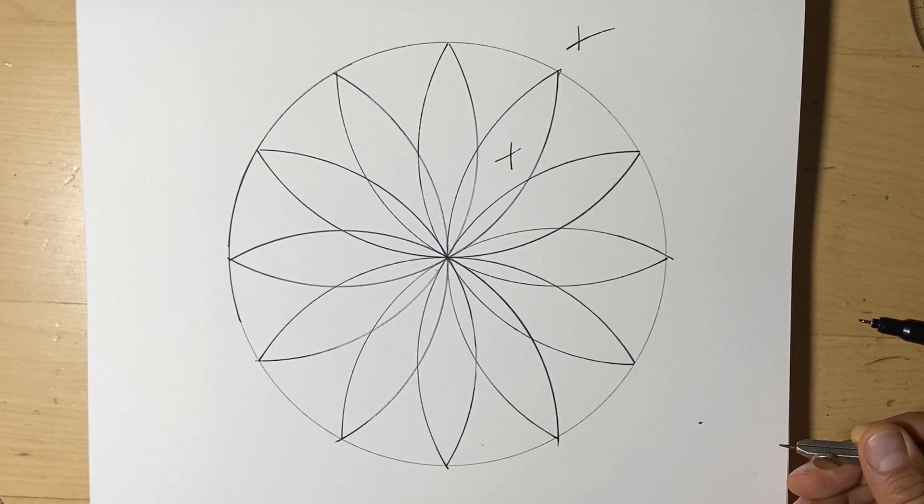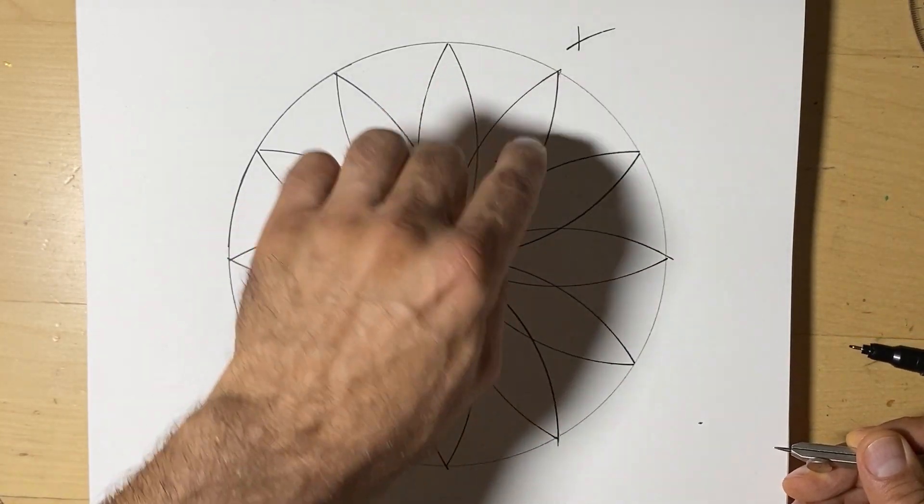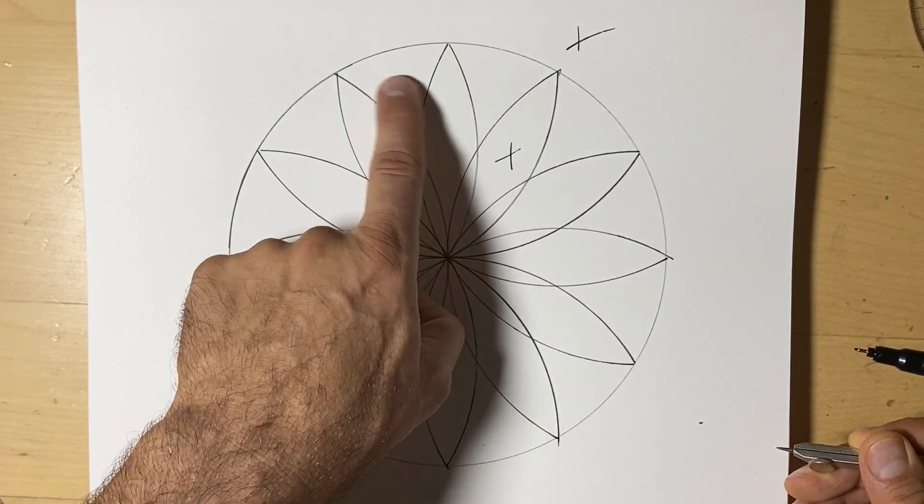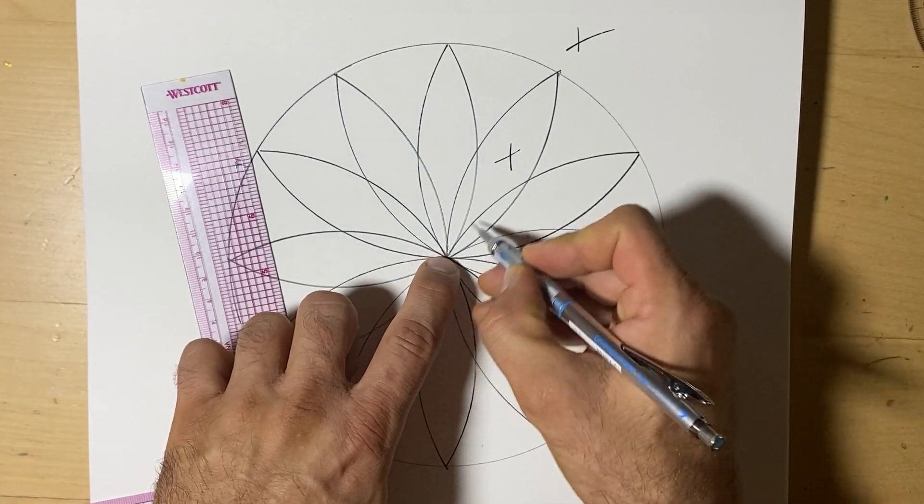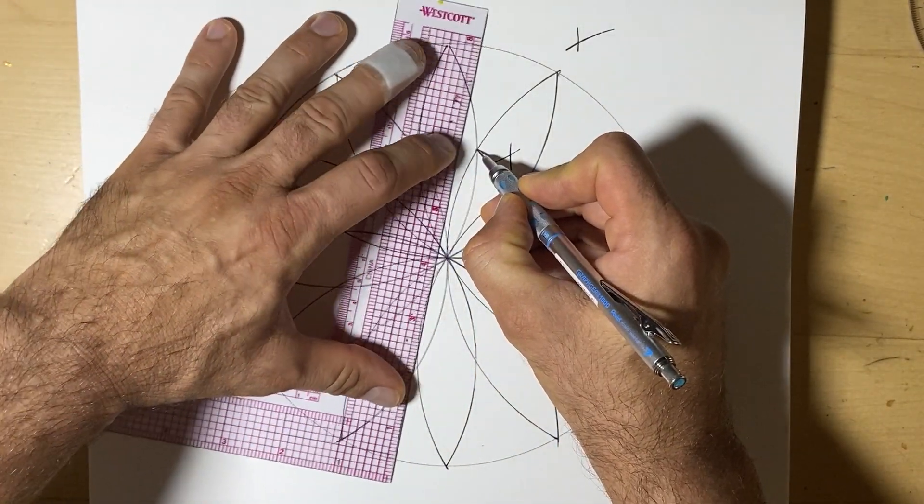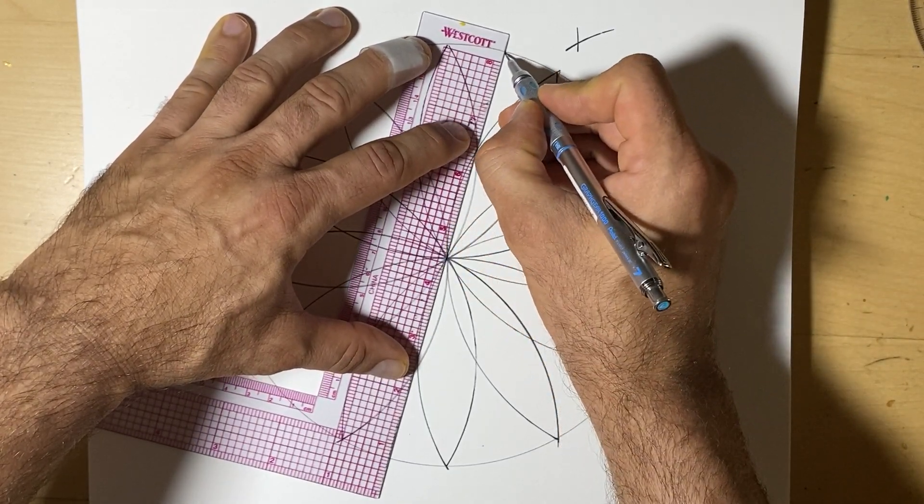Now, we could also do another layer. We could do, if we did another layer, we'd have to find the middle of this and the middle of this. So we could find that now without our compass. We can connect the center to this seed here. And we could find that center spot.